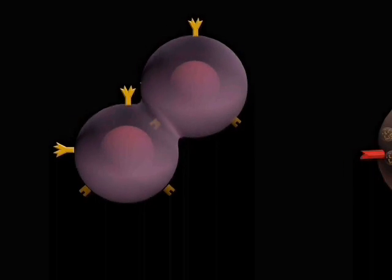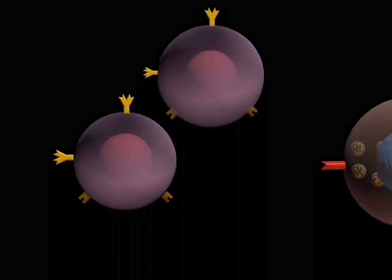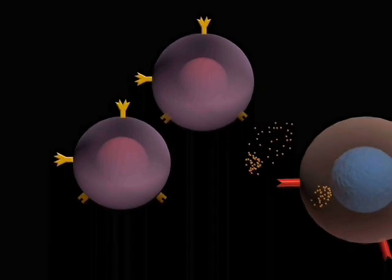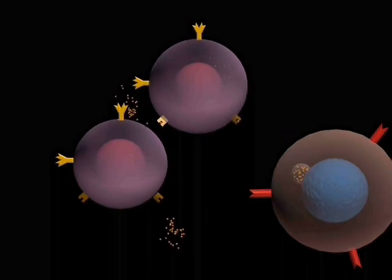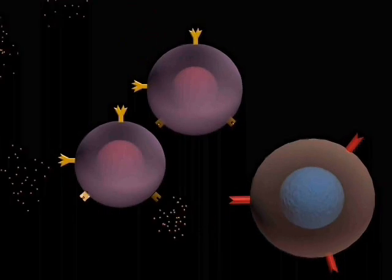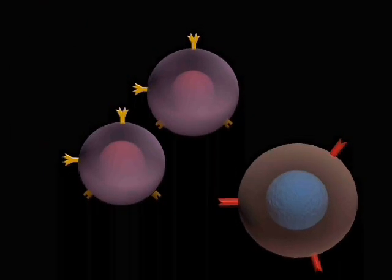Other cytokines released from the TH2 cell, including interleukin-2, interleukin-4, interleukin-5, and interleukin-6, then bind to the appropriate receptors on the B-cells, causing them to differentiate.